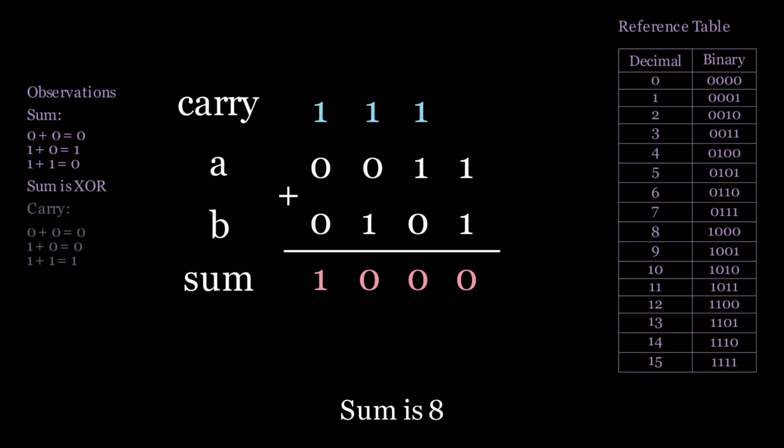Now let's look at the carry. Zero plus zero — no carry. One plus zero — no carry. But one plus one produces a carry of one. This matches the AND operator: zero AND zero is zero, one AND zero is zero, one AND one is one. And since the carry always goes to the left column, we also need to left-shift by one.